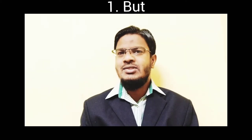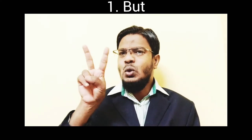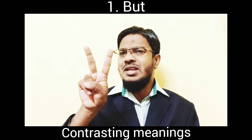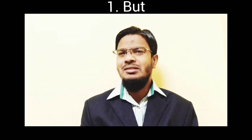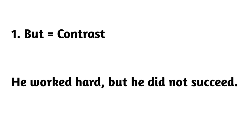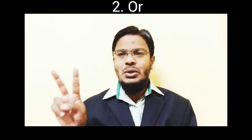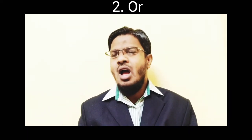The first coordinating conjunction is 'but.' But is used to connect two simple sentences that have contrasting meanings. Example: 'He worked hard but he did not succeed.' You can see 'but' is used to connect two simple sentences that have different meanings.